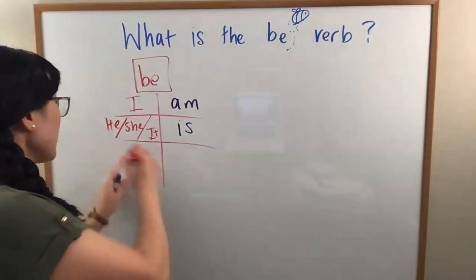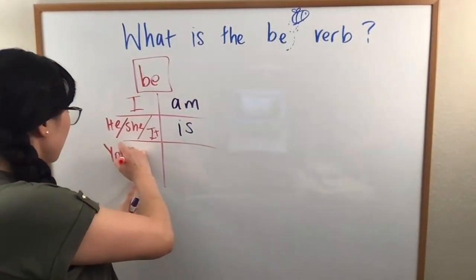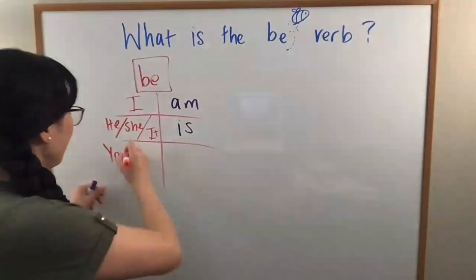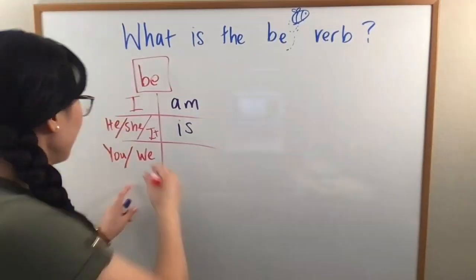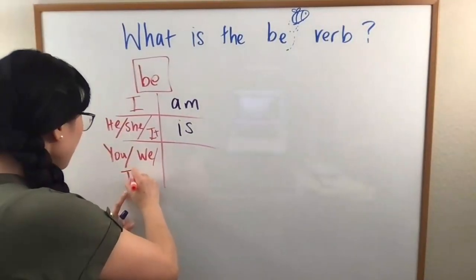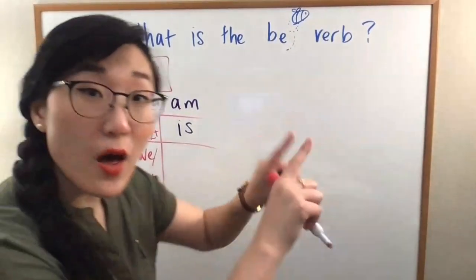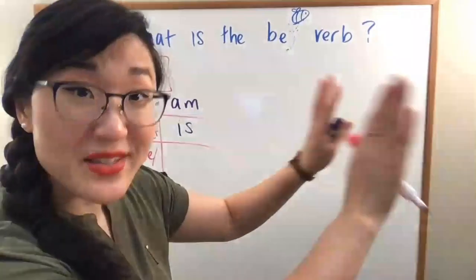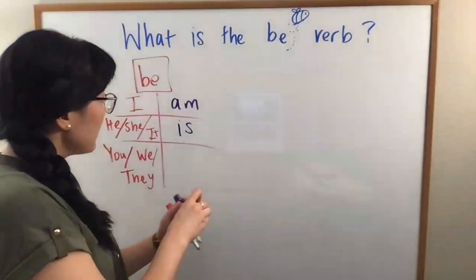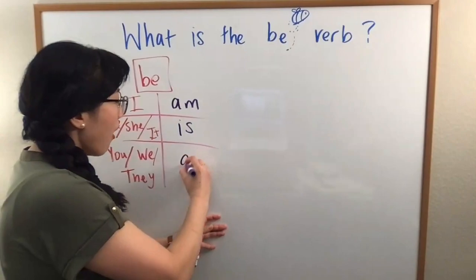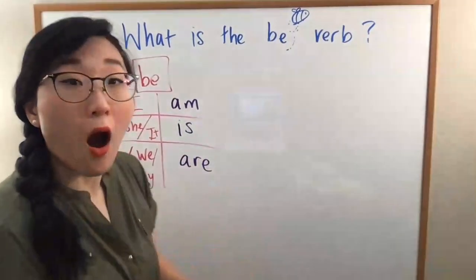Then we have you. You. We. Together. And they. Other people. Or other things. They. That do not include me. This verb is are. Are.